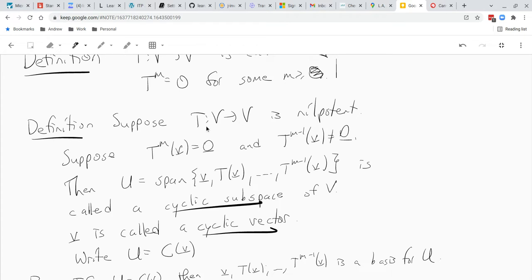Okay, so we have a nilpotent linear operator t, and we have a vector v such that t to the m of v equals 0. Like for example, maybe t to the m is just a 0 transformation. But t to the m minus 1 of v is non-zero. Okay, so in that case, we take the span of v, t of v, t squared of v, all the way up to t to the m minus 1 of v, throw that in a subspace, call that u, and we call that u a cyclic subspace.